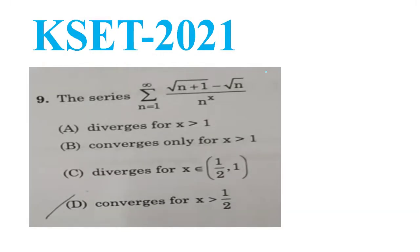The first question is from KSET 2021. The series is: summation of (root(n+1) minus root(n)) divided by n raised to x. The options given are: (a) diverges for x greater than 1, (b) converges only for x greater than 1, (c) diverges for x in the open interval (1/2, 1), (d) converges for x greater than 1/2.